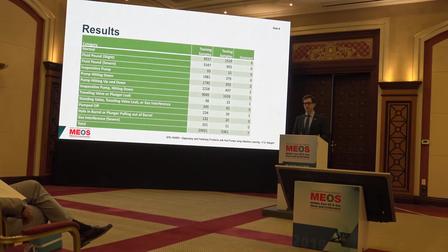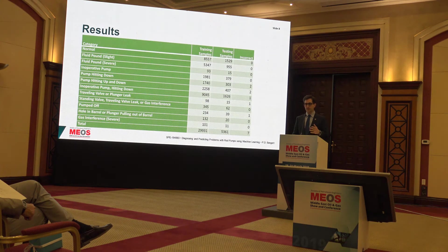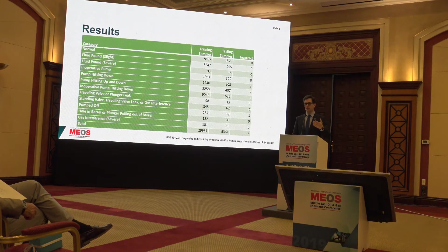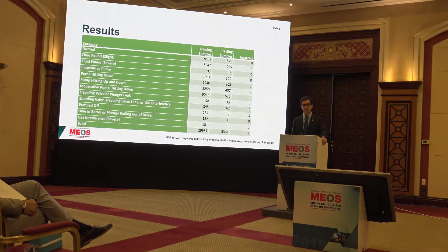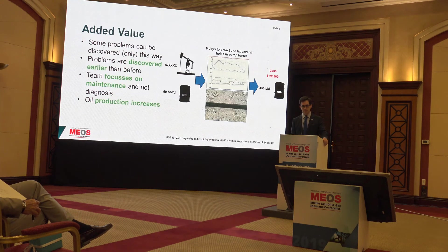This frees up the human expert to do other things that require their intelligence and domain knowledge more — in other words, scheduling the actual maintenance activity, determining which spare parts are needed, and deciding which crew to send out. Those are the decisions that really need a domain expert; this diagnosis we can automate. There's a further advantage: because dynamometer cards are collected at three or four per minute, automation allows us to diagnose every single one — an absolute impossibility for a human domain expert, who could not go through thousands of images every few minutes.